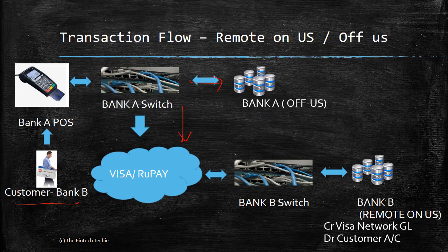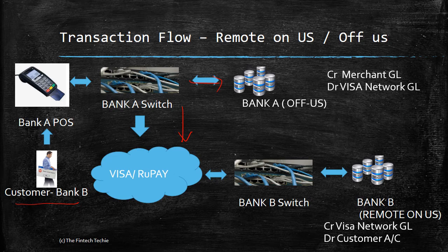Simultaneously, a copy of the message goes to Bank A's database, because the merchant is associated with Bank A. Bank A debits the Visa network GL and credits the merchant GL. So Bank B owes Visa, and Bank A is owed by Visa. This completes the off-us flow: Bank A acts as the acquirer, Bank B as the issuer.